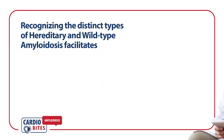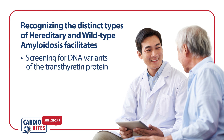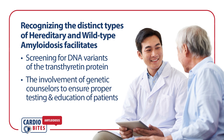In summary, recognizing the distinct types of hereditary and wild type amyloidosis will allow you to effectively screen for DNA variants of the transthyretin protein and effectively involve genetic counselors to ensure proper testing and education of patients and family members.